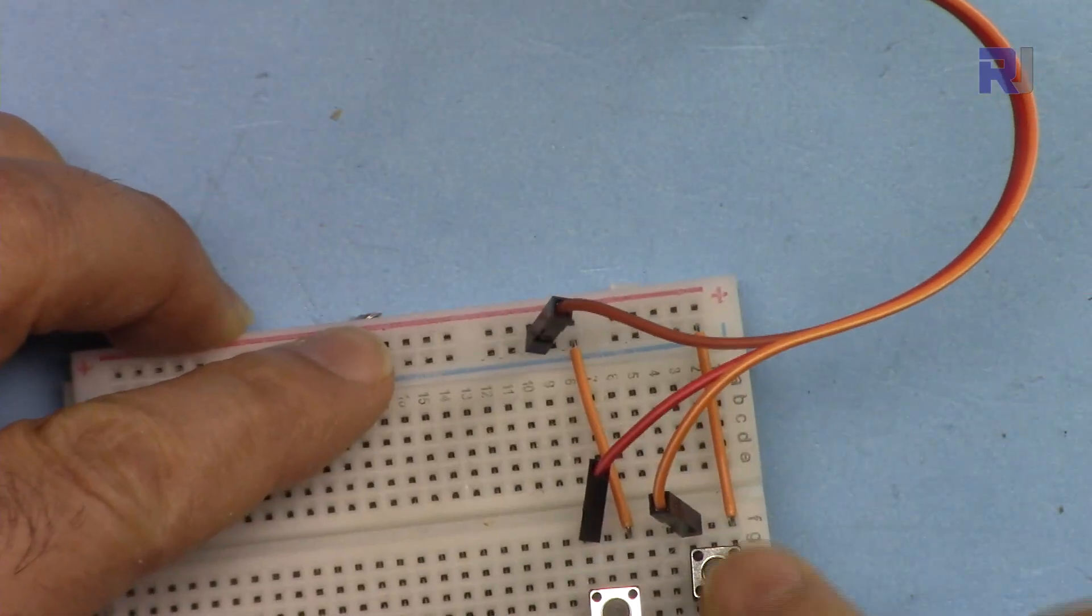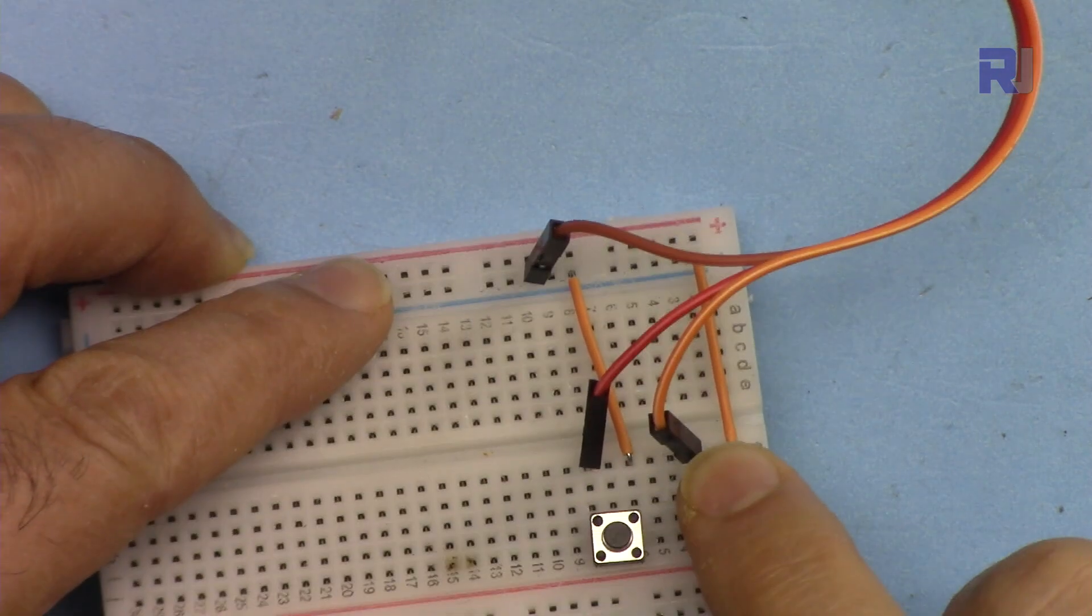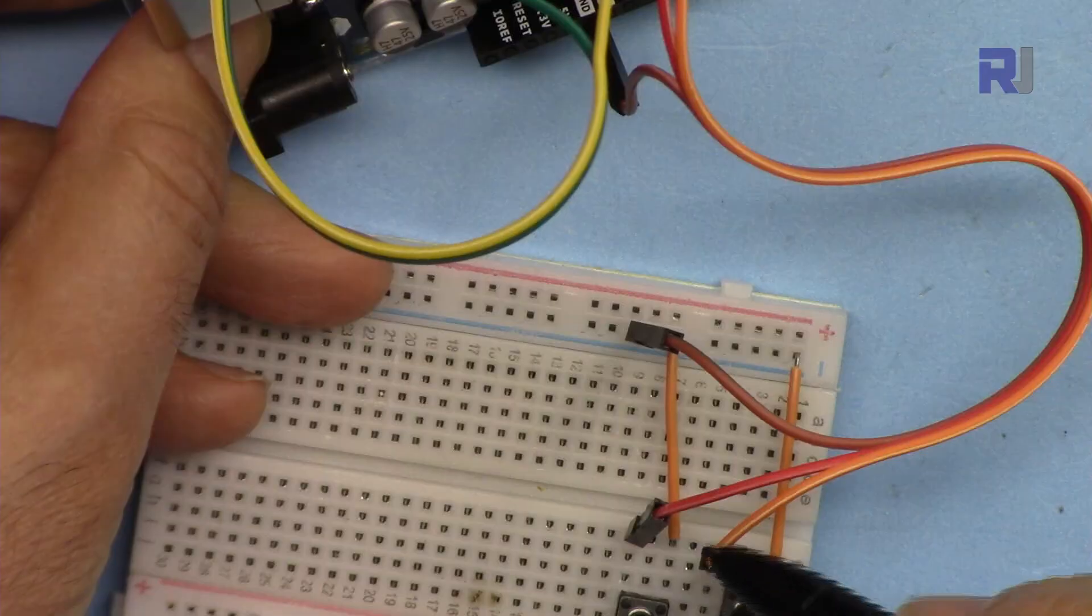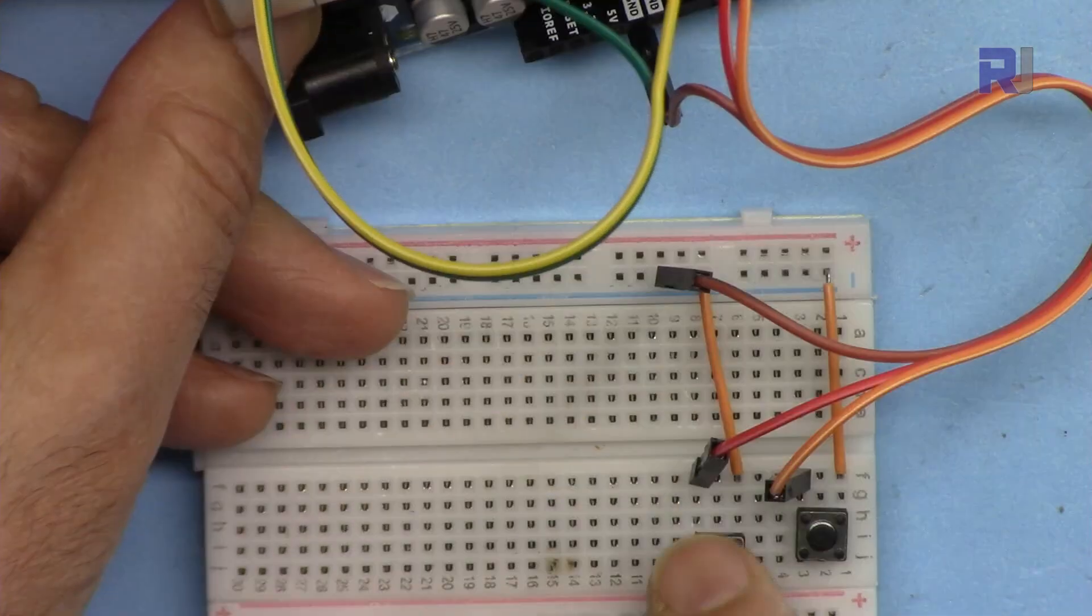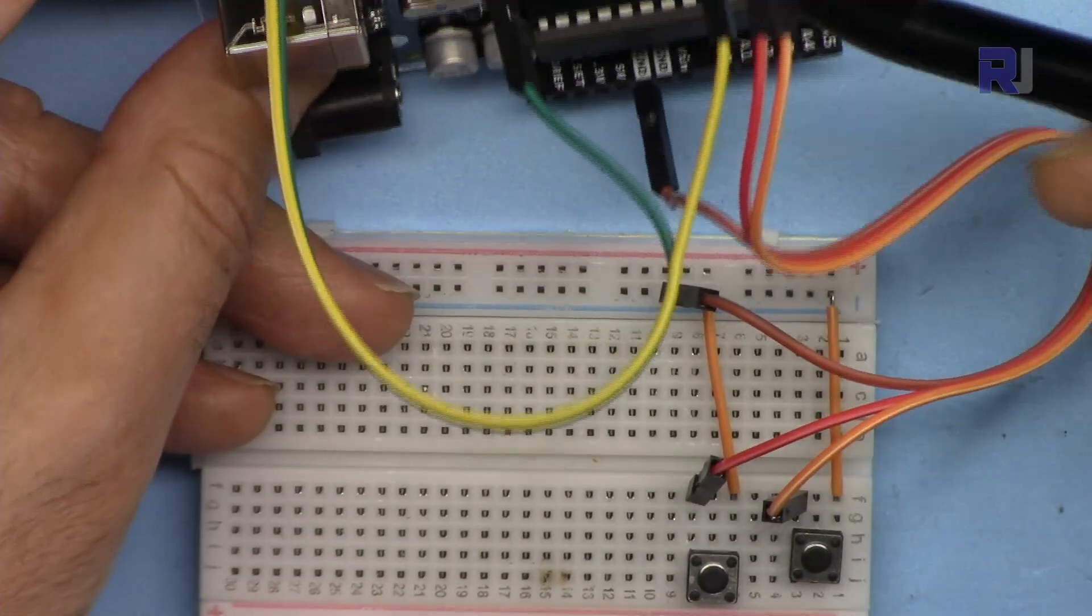This switch is for turning it on and this is for turn off. This is connected with this orange wire to pin 2, and for the turn off switch the red is connected to pin 3.